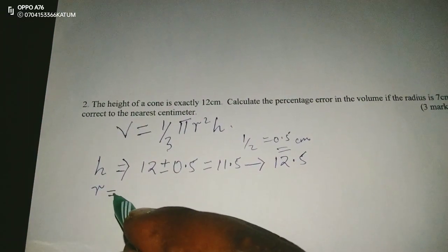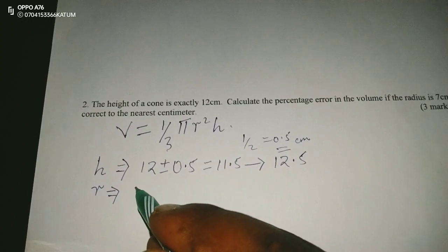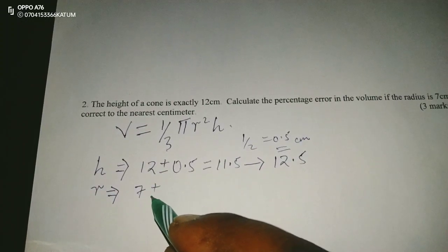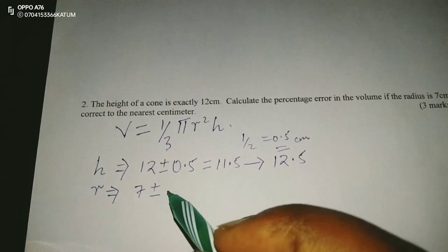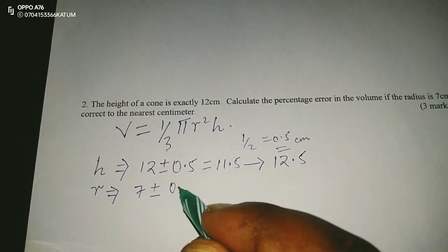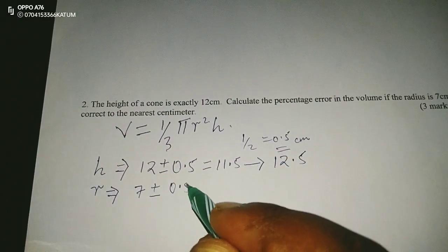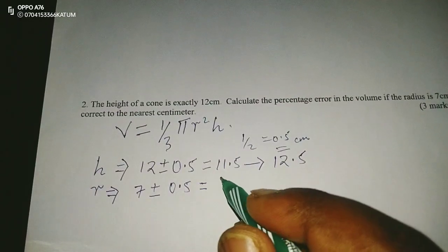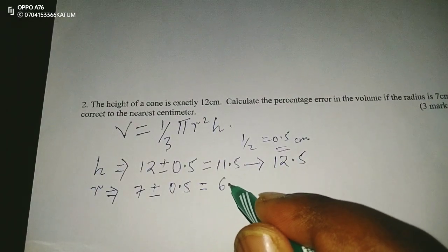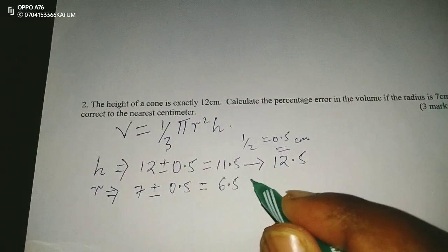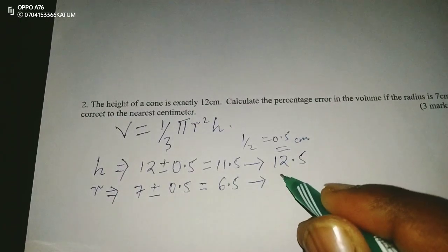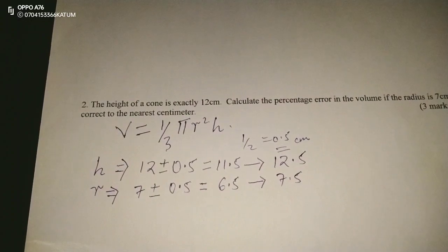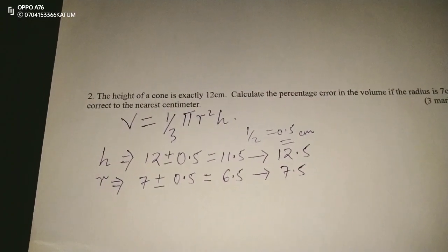The radius of the same cone, which has also been recorded to the nearest centimeter, means that the absolute error in this recording is also 0.5. That means the accuracy of this radius is within 6.5 and 7.5 centimeters.